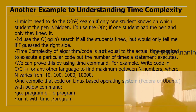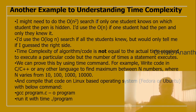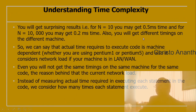The time complexity of an algorithm or code is not equal to the actual time required to execute it, but rather the number of times a statement is going to execute. We can measure this using the time command — for example, writing a C or C++ program to find the maximum of n numbers where n varies from 10 to 100 to 1000 to 10,000, compiled on a Linux-based system using GCC.